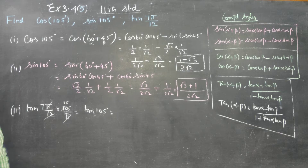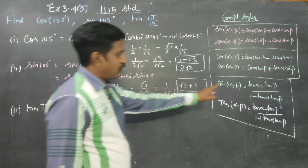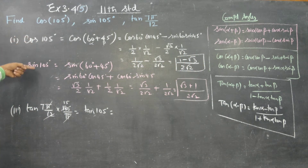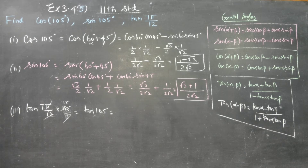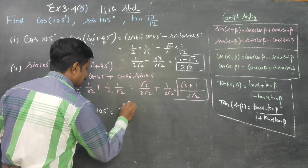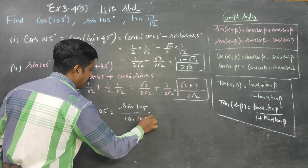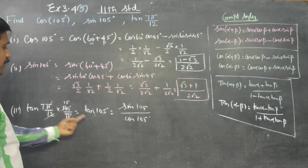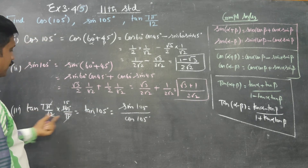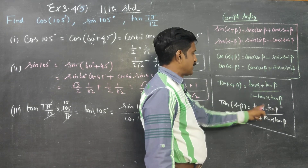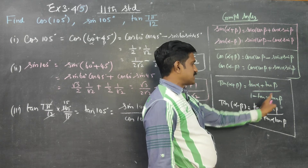Tan 105° equals tan(60° + 45°). We can use the compound angle formula: tan(A + B) = (tan A + tan B)/(1 − tan A·tan B). However, since we already found sin 105 and cos 105, we can simply use tan = sin/cos.